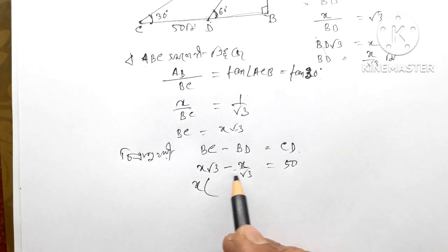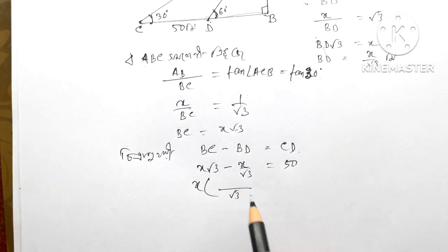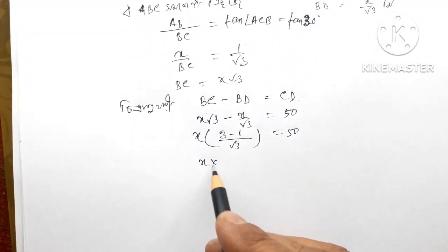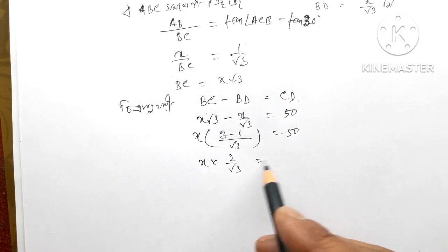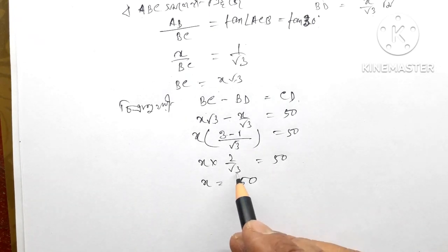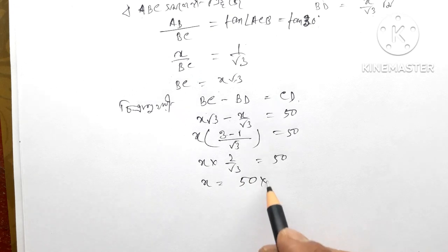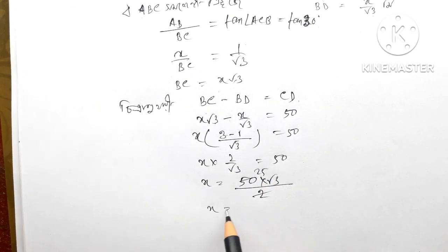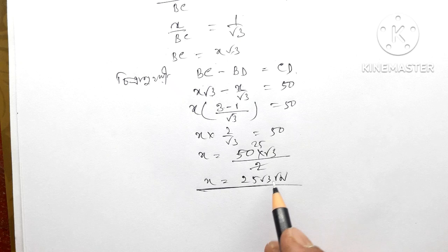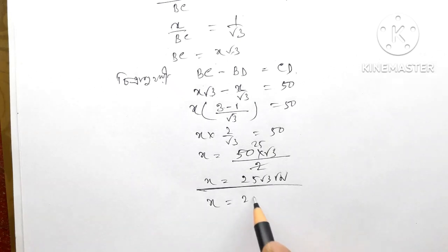Then buying root 3 is root 3 minus 1 by root 3, root 3 is equal to 3 minus 1. Then 21, 21, 2 equals 2Y 81. Then having x: 3, 3, 4, 2, 3, 4, 1, 2, 2. 1, 3. 2, 3, 2, 3. 2.